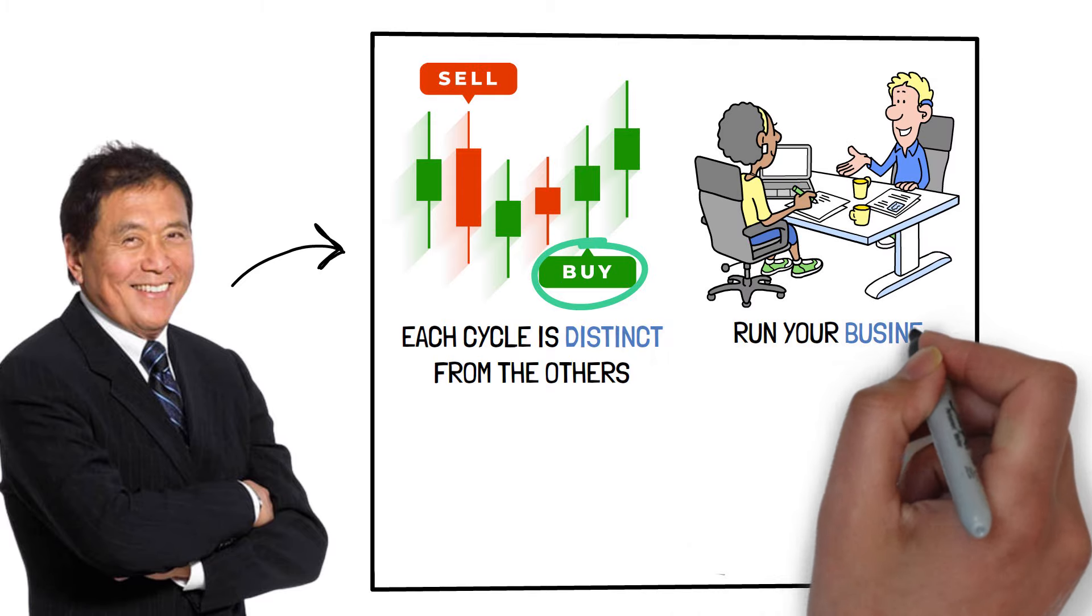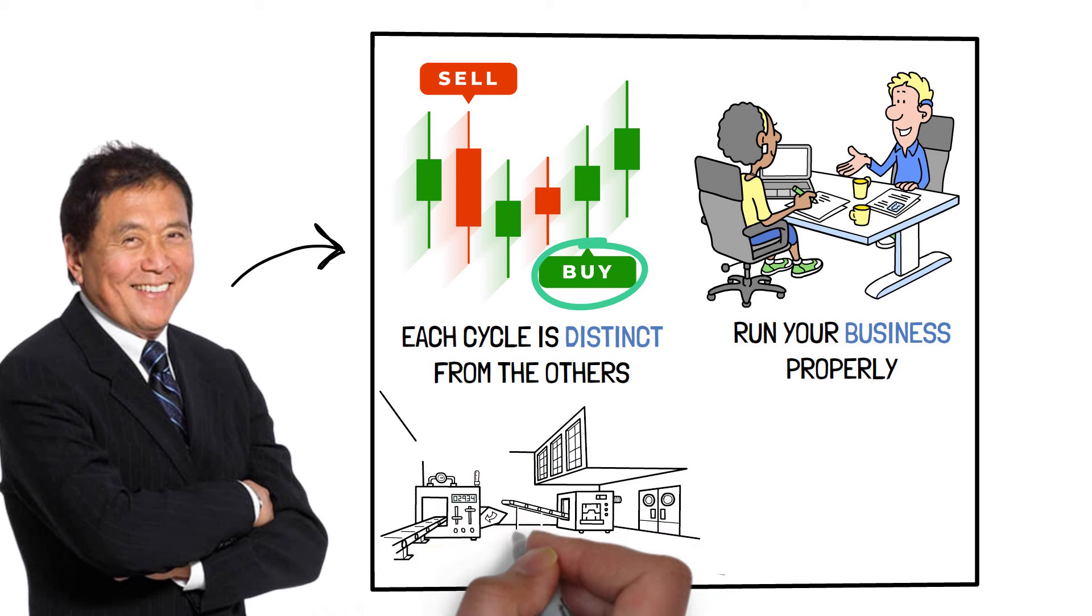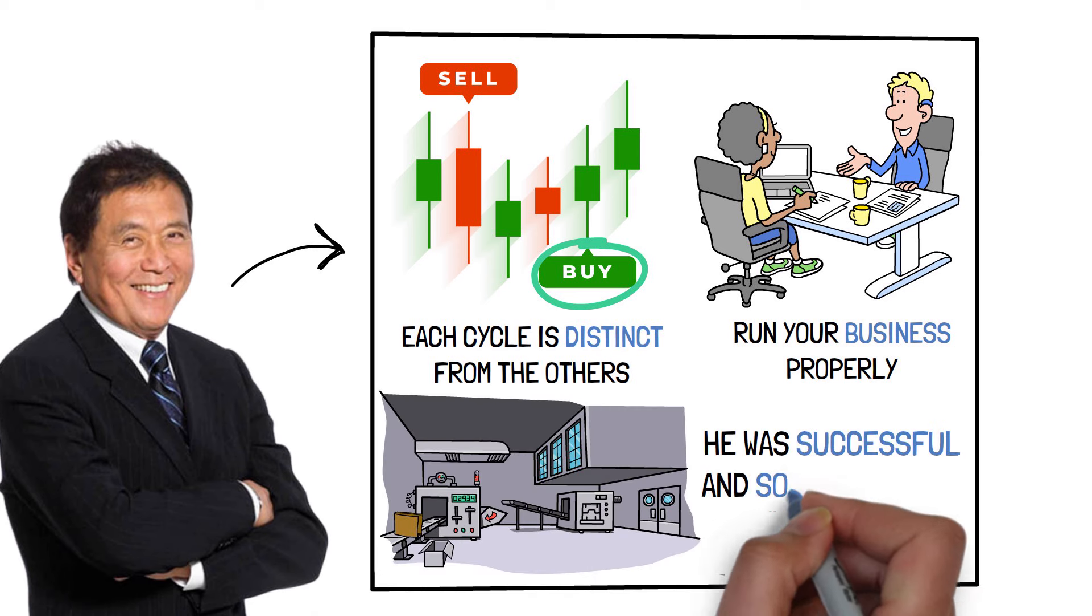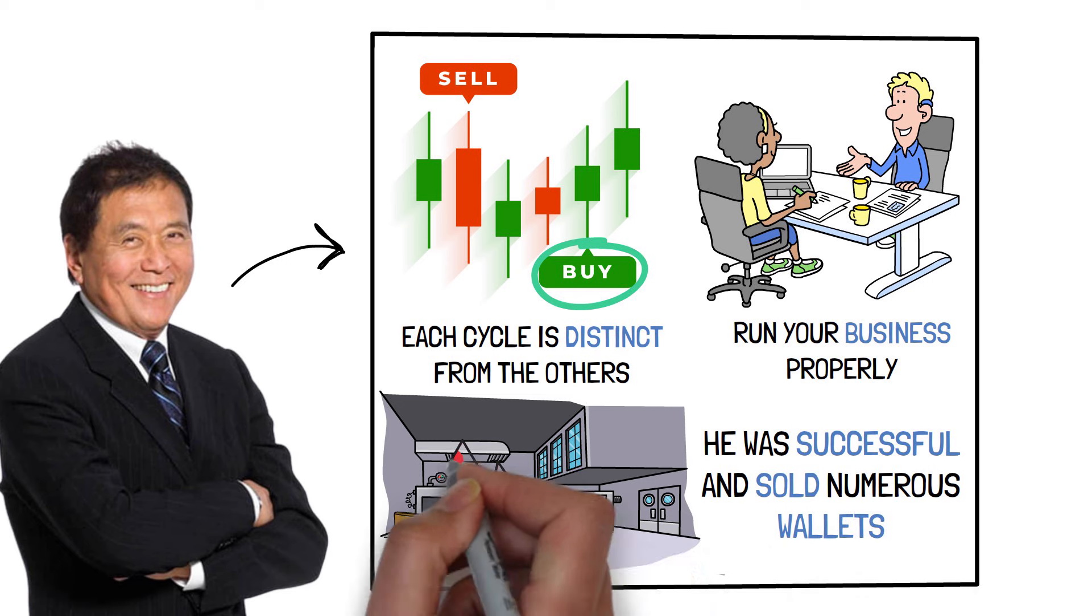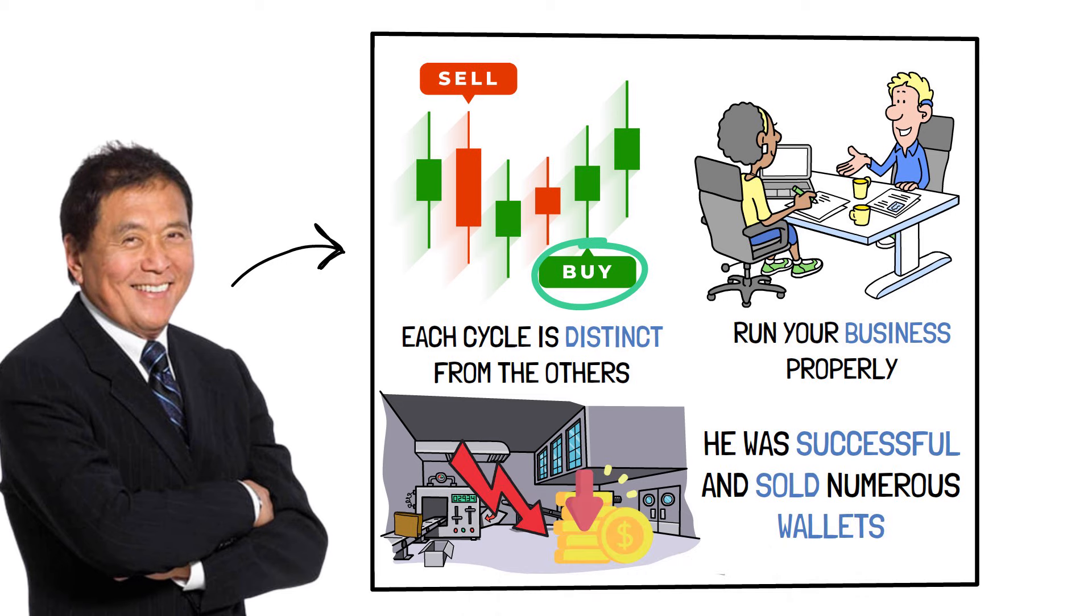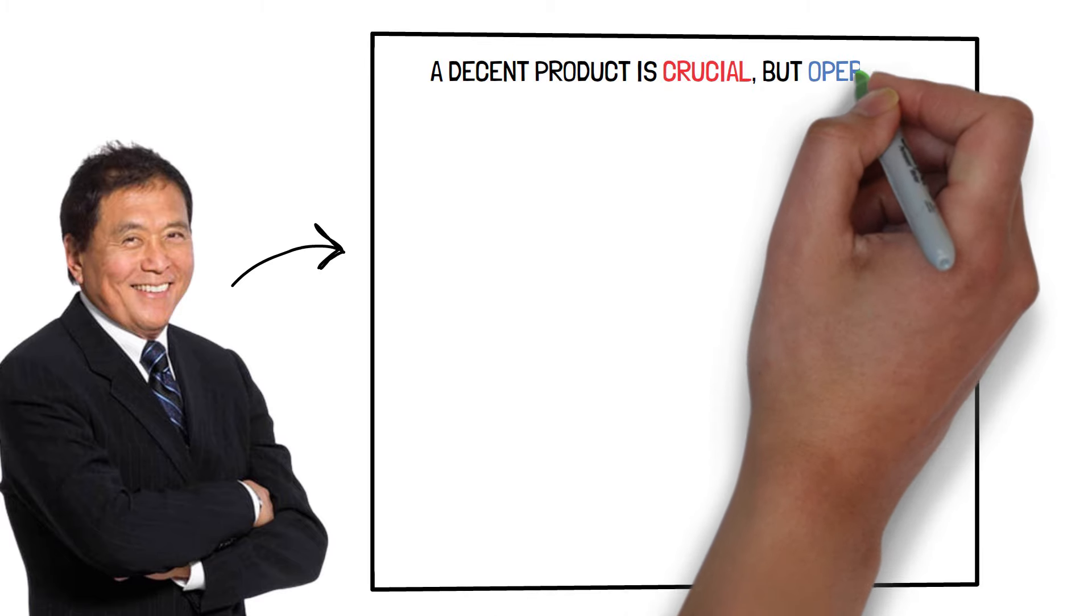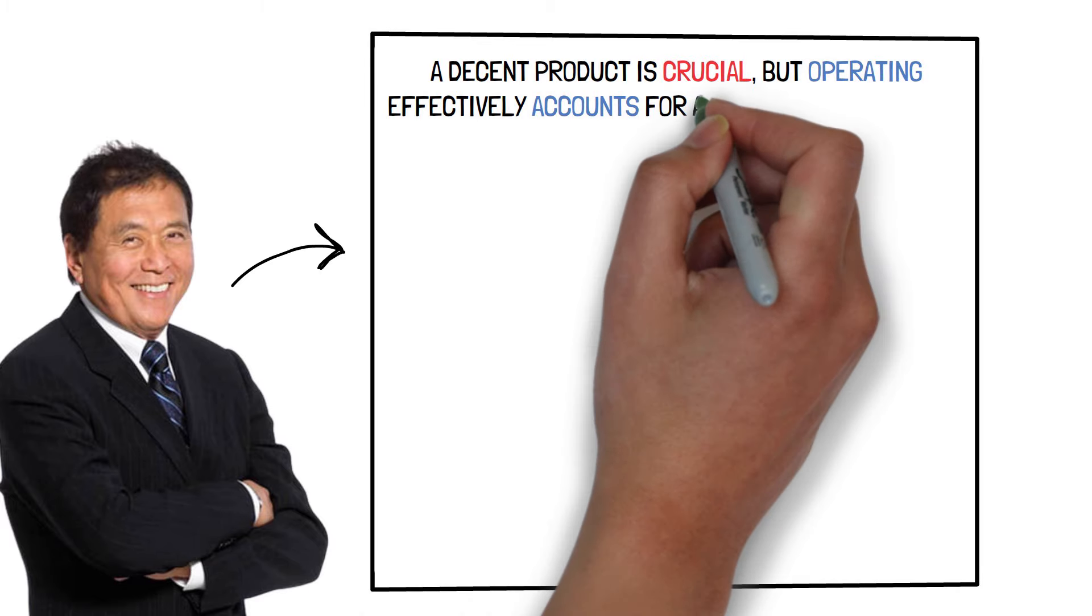Run your business properly. Kiyosaki's initial business was a wallet manufacturer. He was successful and sold numerous wallets, but the company was always losing money since it was not administered properly. A decent product is crucial, but operating effectively accounts for a big amount of success.